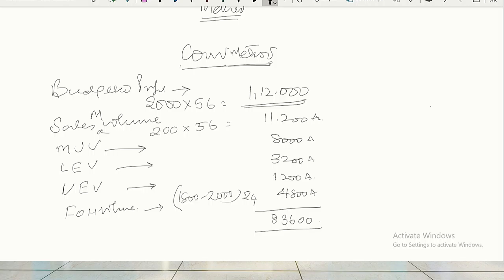Therefore 200 into 56, 11,200. Then usage variance, we calculated 8,000 adverse. Efficiency, 3,200 adverse. Variable overhead efficiency, 1,200 adverse. Fixed overhead volume variance, 4,800. So actual profit, 83,600. So dear friends, you have to understand one thing. When you are doing the exam, conventional method we are done. Now we are going to approach it. If material is scarce, how will you present it? Relevant cost and marginal cost. Marginal cost means fixed cost will not come. Remember, that fixed cost column will be 0, 0, 0, 0, all the three. So that is out. Clear.